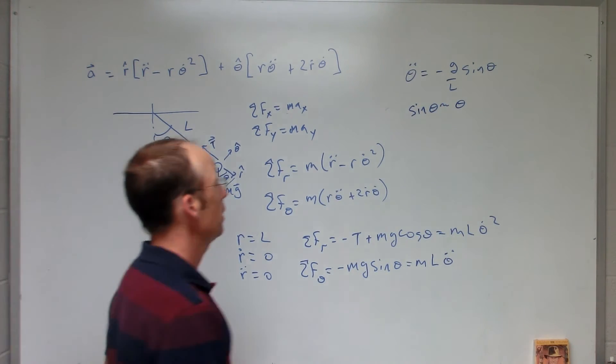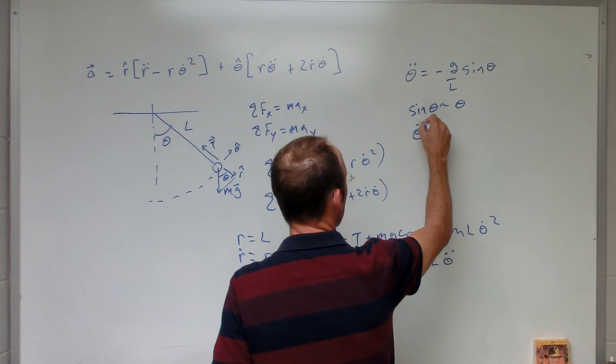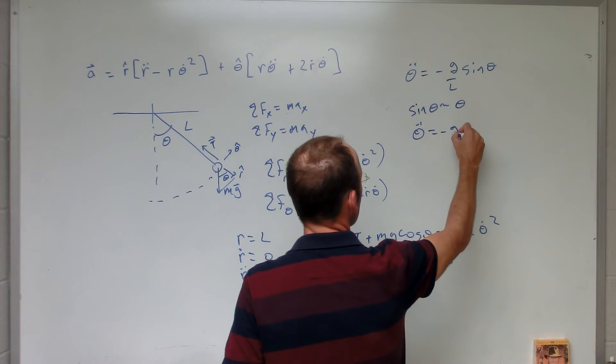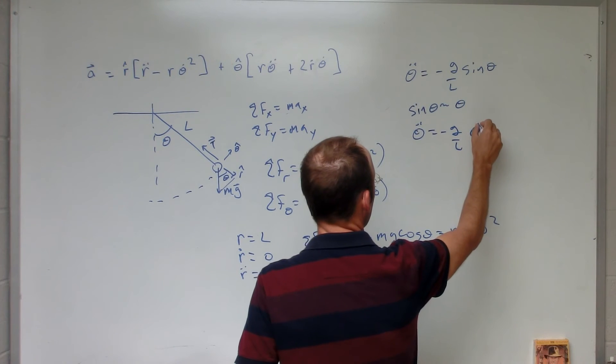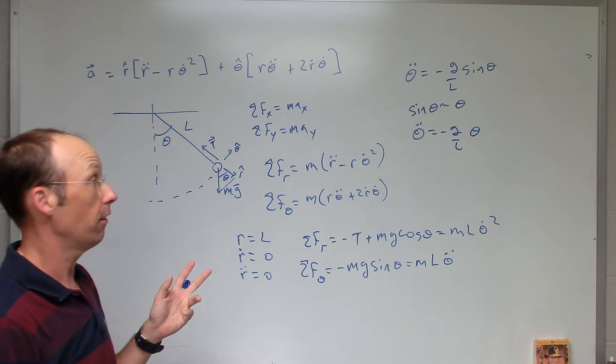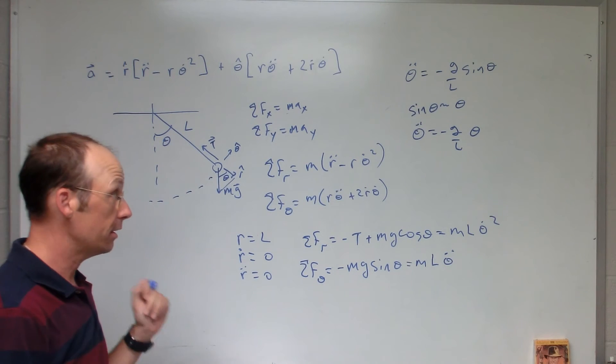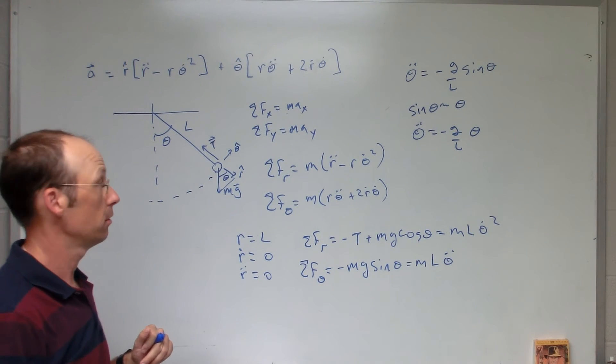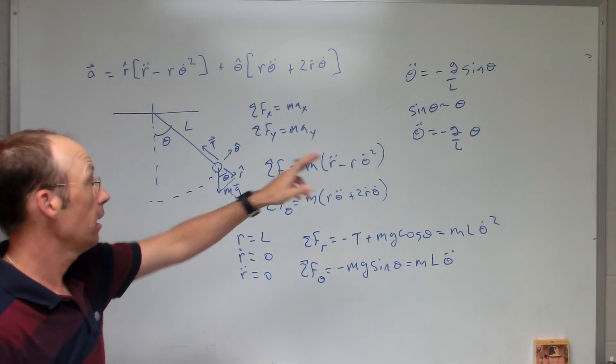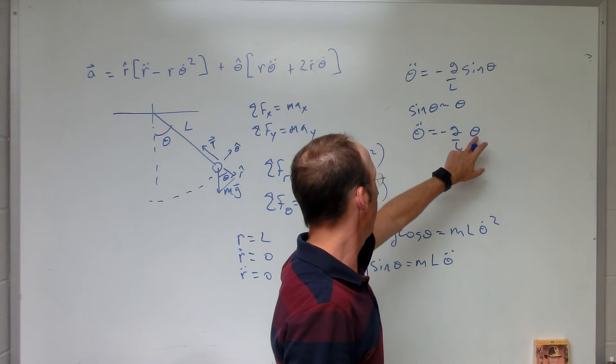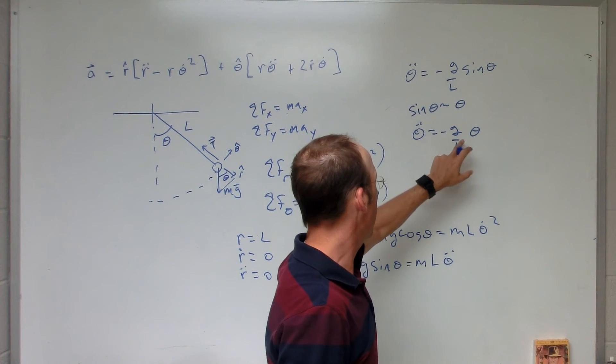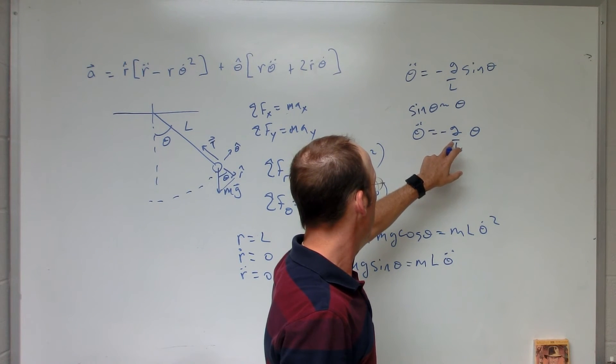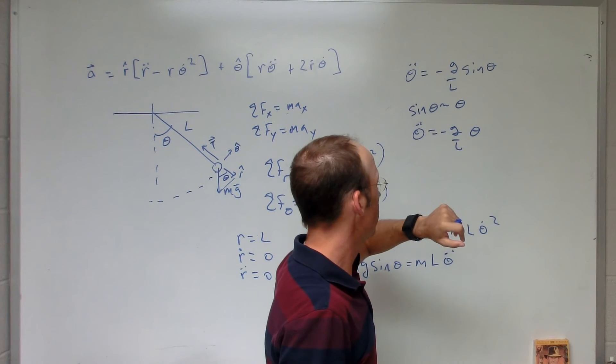And in that case, I get theta double dot equals negative g over L theta. And this you may recognize as the same form as simple harmonic motion. Okay. So what could I, I take the derivative of this twice, and I get negative g over L times f.